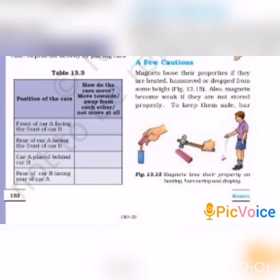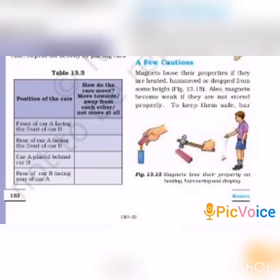Magnets lose their properties if they are heated, hammered, or dropped from some height. Magnets have properties such as attraction, repulsion, and attracting magnetic materials.